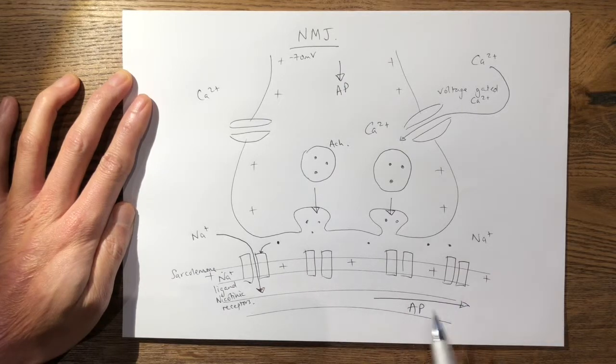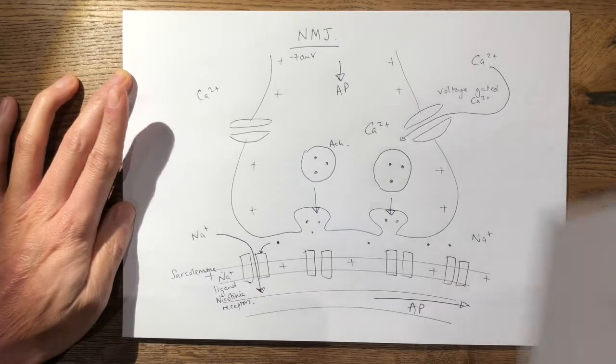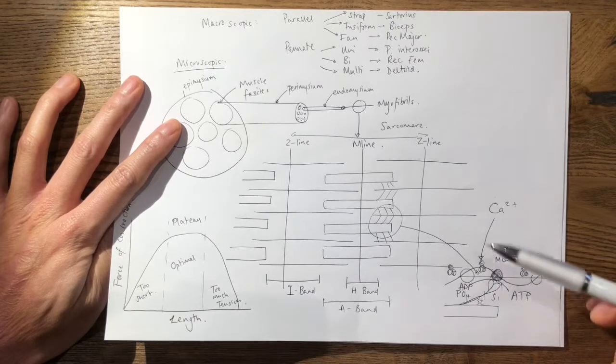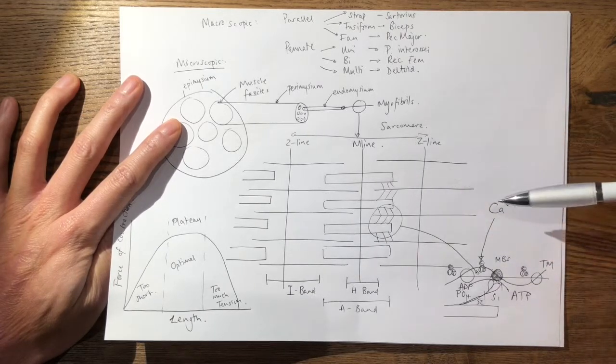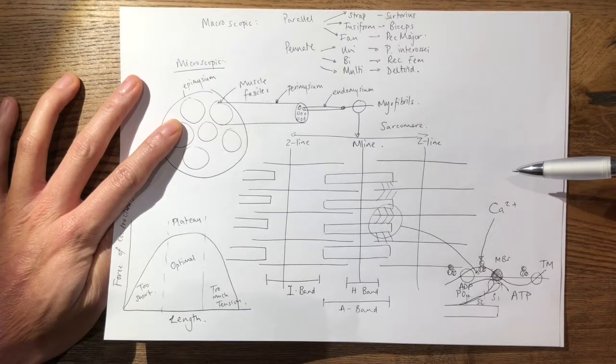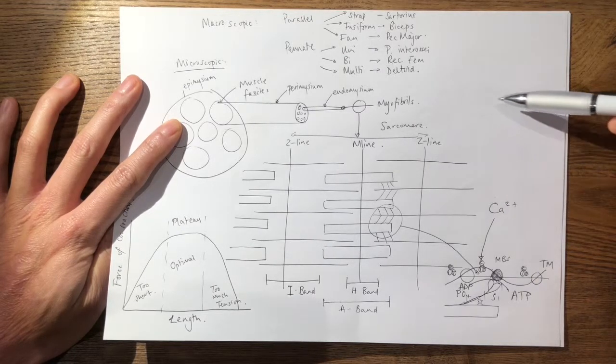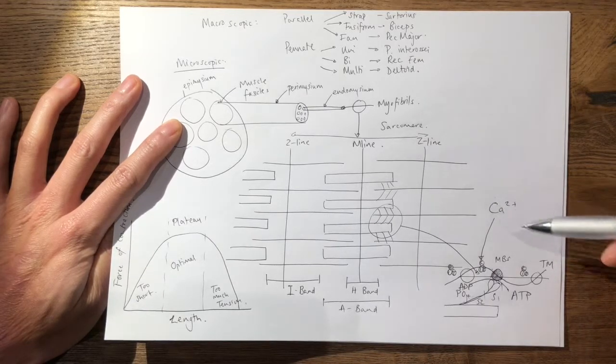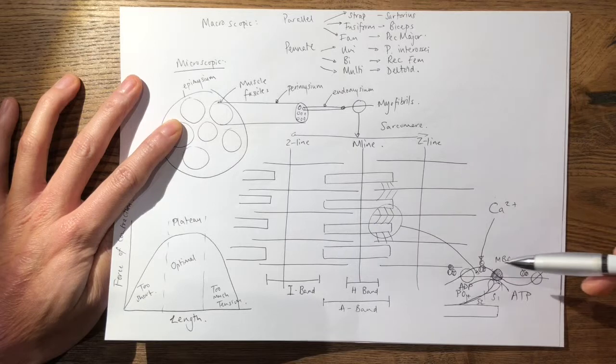If you remember from the muscle video, the action potential comes down the sarcolemma down to the T-tubules and it causes calcium release from the sarcoplasmic reticulum where you have a repository of calcium.